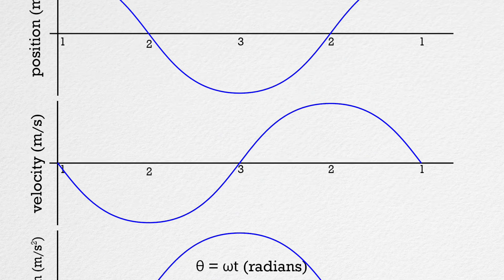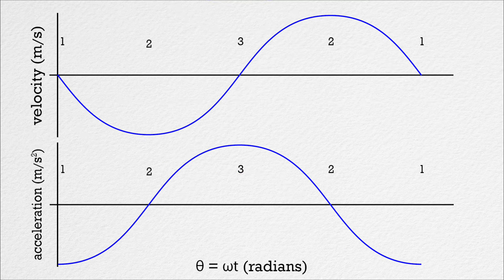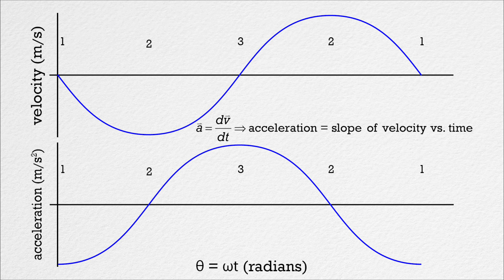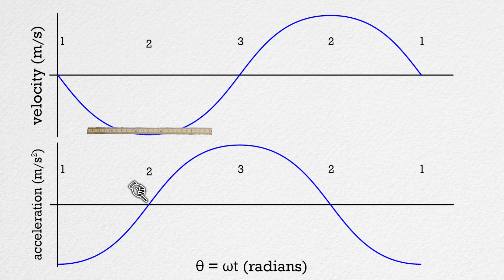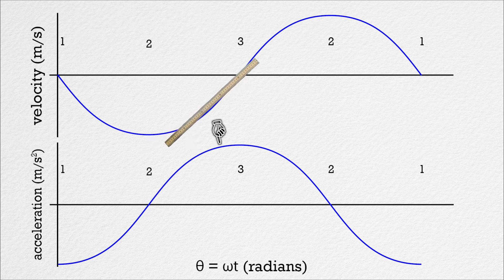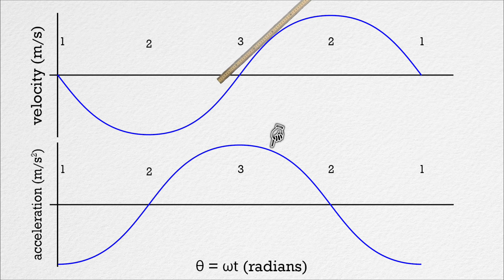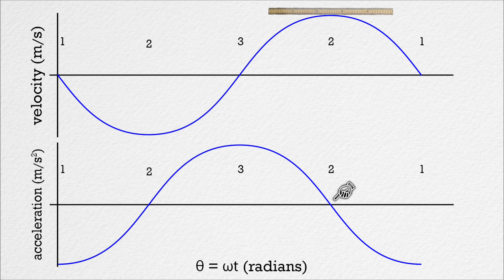Bobby, could you please do the same thing with the velocity and acceleration graphs? The slope of a velocity as a function of time graph is acceleration. Starting at position one, the magic tangent line finder shows us that the slope of the velocity curve is negative there, and as we go from one to two, the slope increases in value to zero at position two. That is why the acceleration at position one has its largest negative value and then increases to zero at two. From two to three, the slope of the velocity curve is positive and increases to its maximum value at three. That is why the acceleration is positive and increasing from two to three and has its maximum value at three.